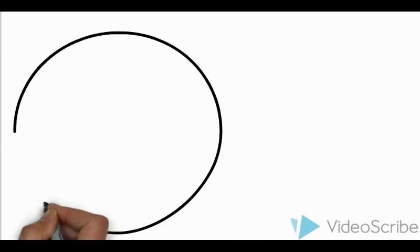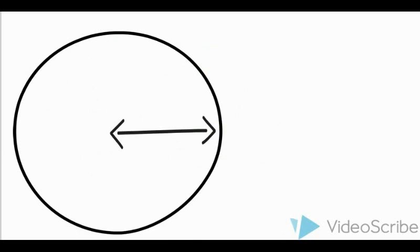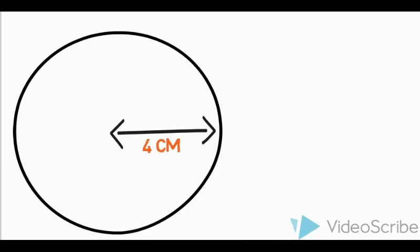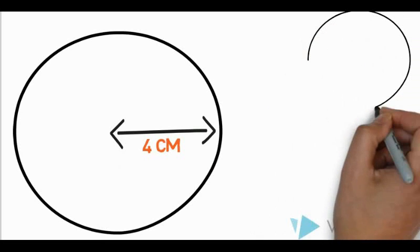Here's the question. We have a bigger circle in which we need to put smaller circles. The radius of the bigger circle is 4 cm, and our smaller circle is 2 cm.